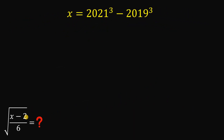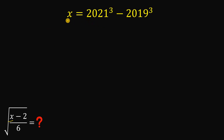Given that x equals 2021 cubed minus 2019 cubed, the goal is to evaluate the expression square root of x minus 2, all over 6. To answer this kind of question, we are going to first simplify x.